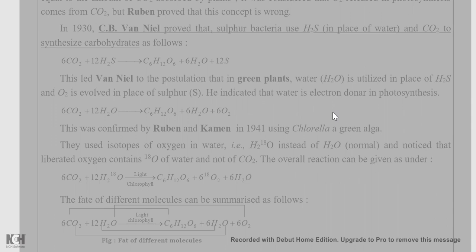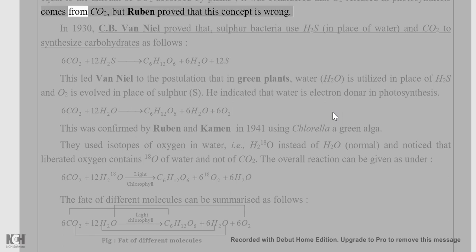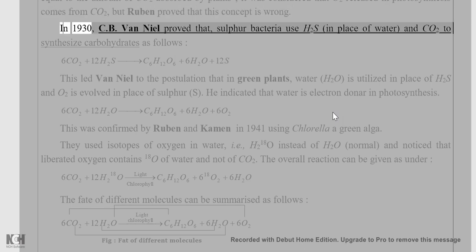On the basis of the discovery of Nicolas de Saussure that the amount of O2 released from plants is equal to the amount of CO2 absorbed by plants, it was considered that O2 released in photosynthesis comes from CO2. But Rubin proved that this concept is wrong. In 1930, C.B. van Neel proved that sulfur bacteria use H2S in place of water and CO2 to synthesize carbohydrates.